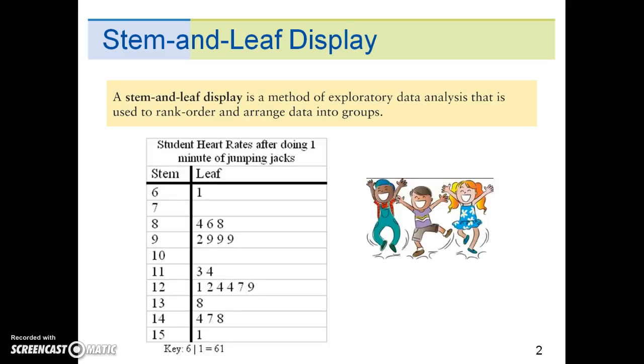Here is an example of a stem-and-leaf display that shows student heart rate after doing one minute of jumping jacks. We can visually see that the majority of the leaves are in stem 12. As such, this is the highest frequency of heart rate, which can provide a starting point for further data analysis.